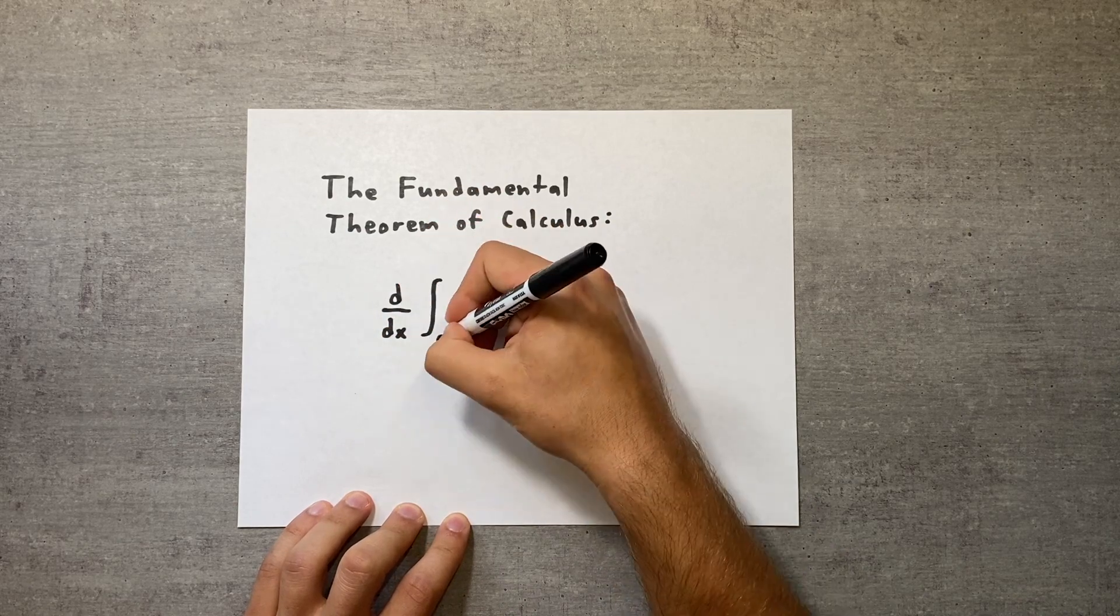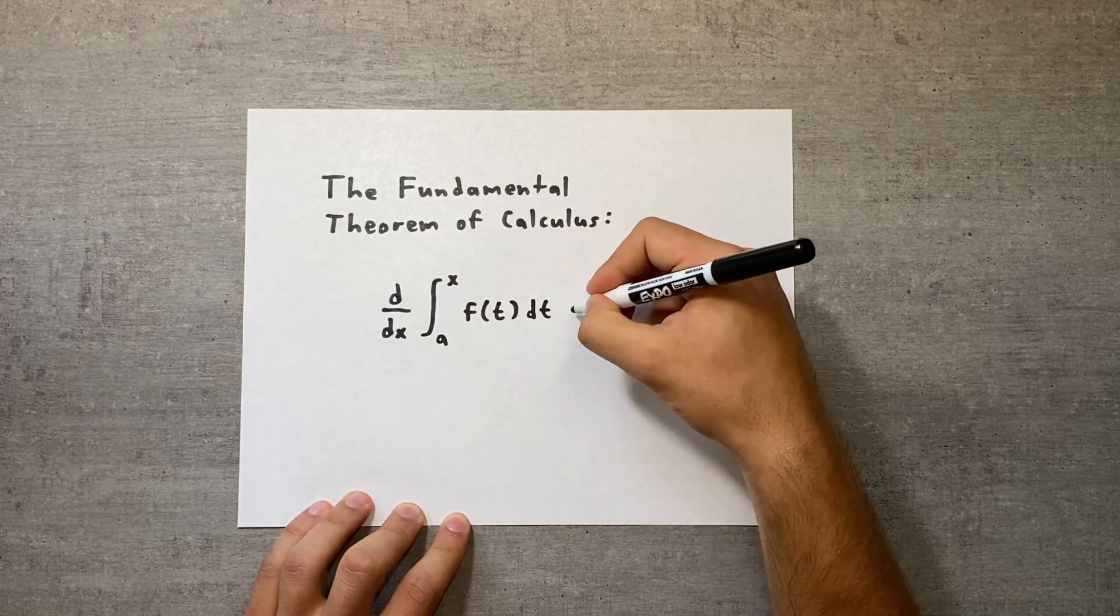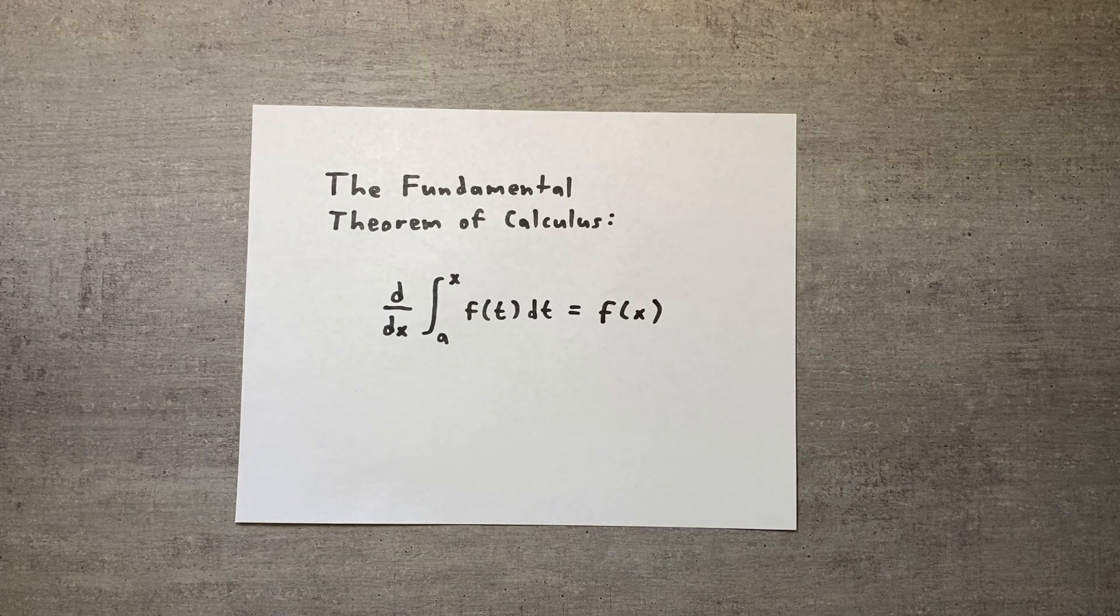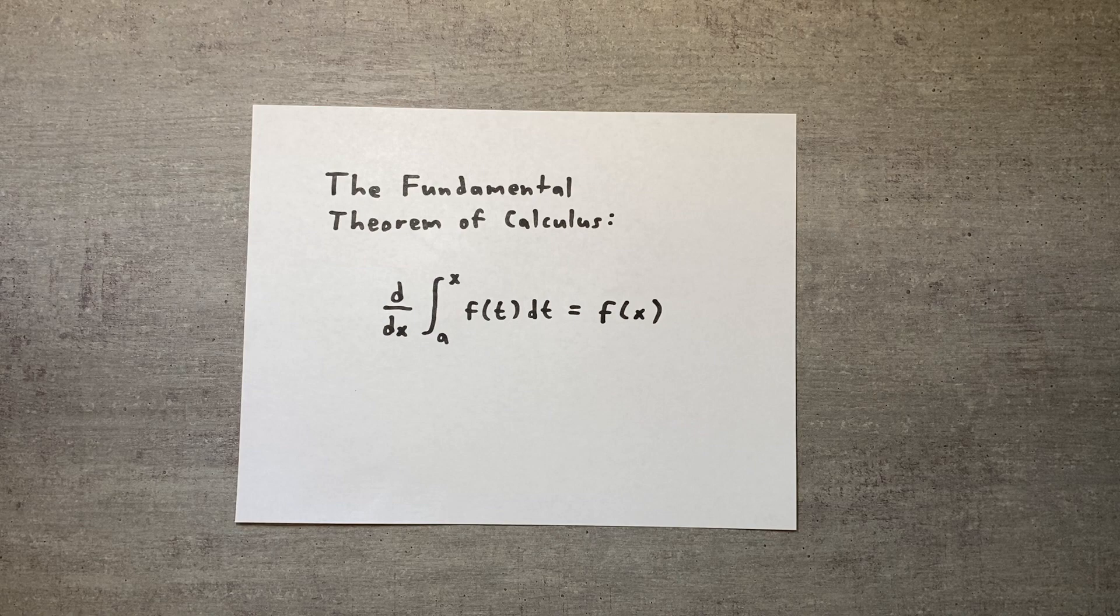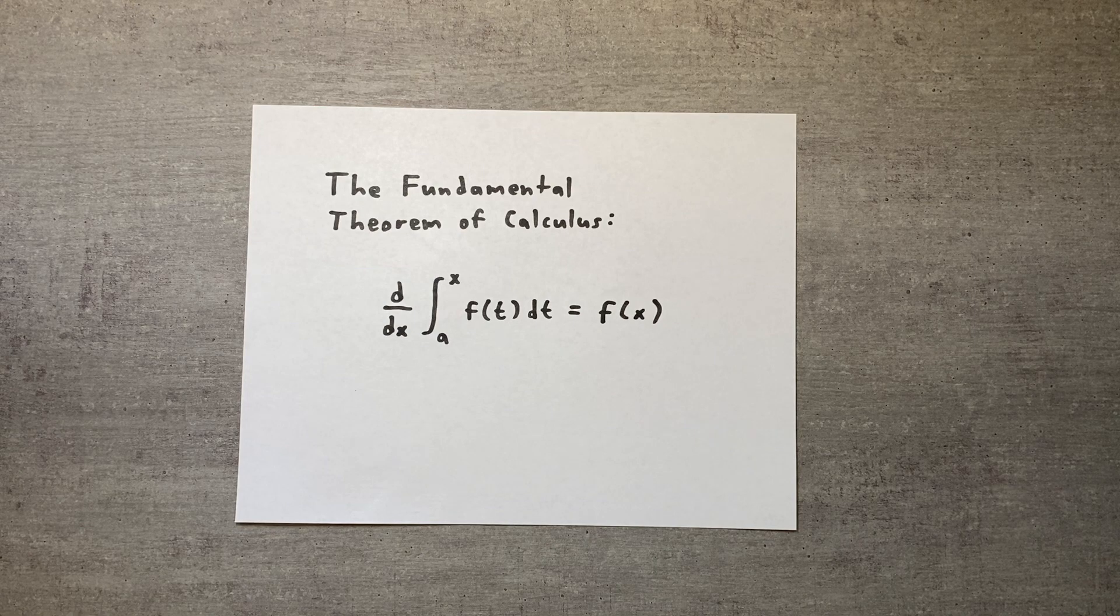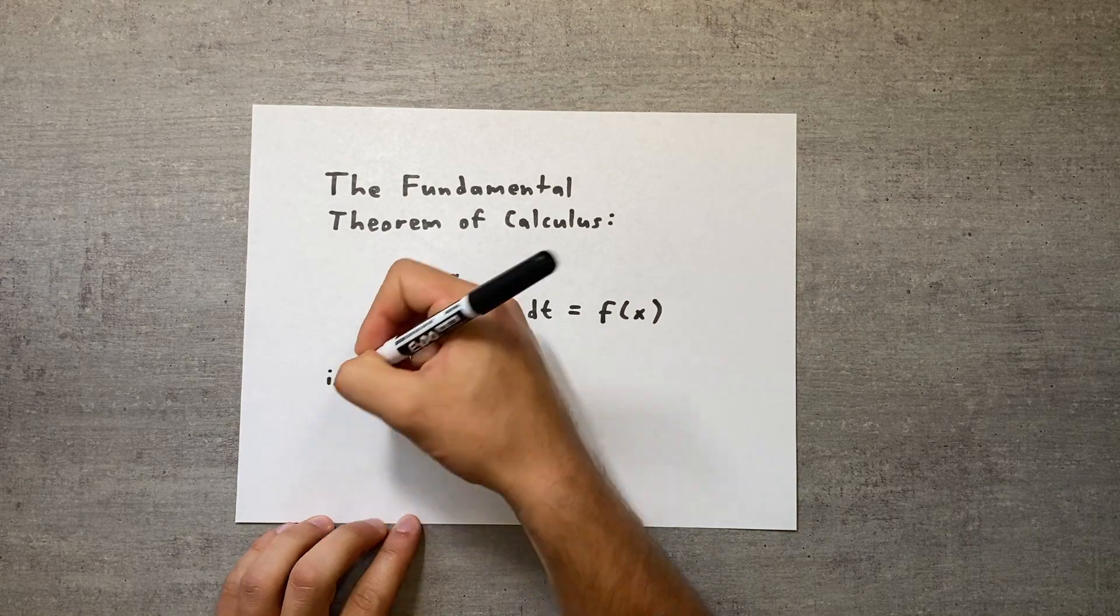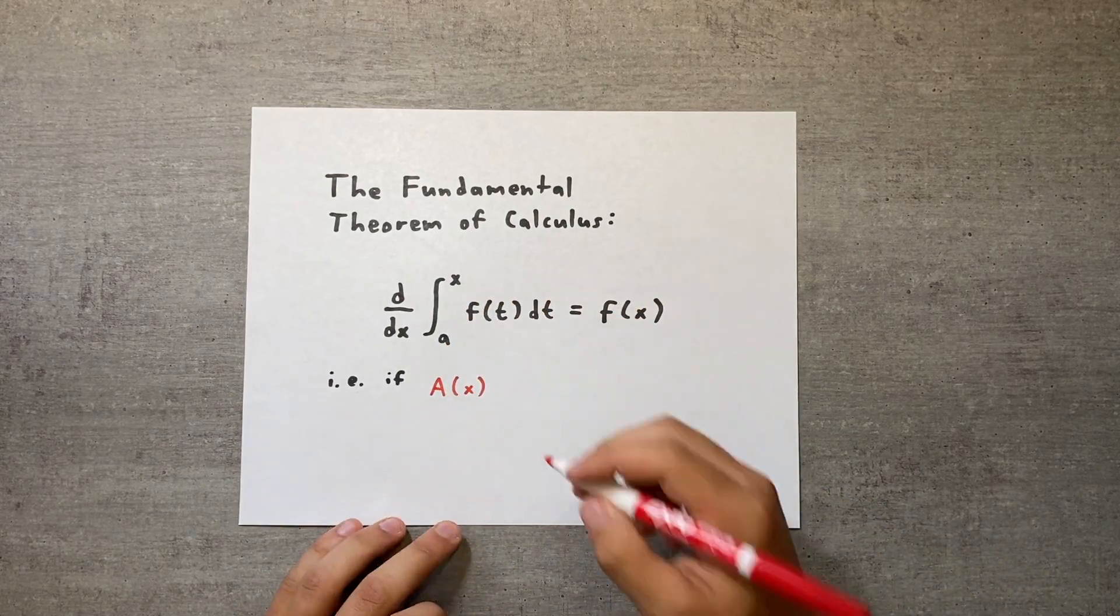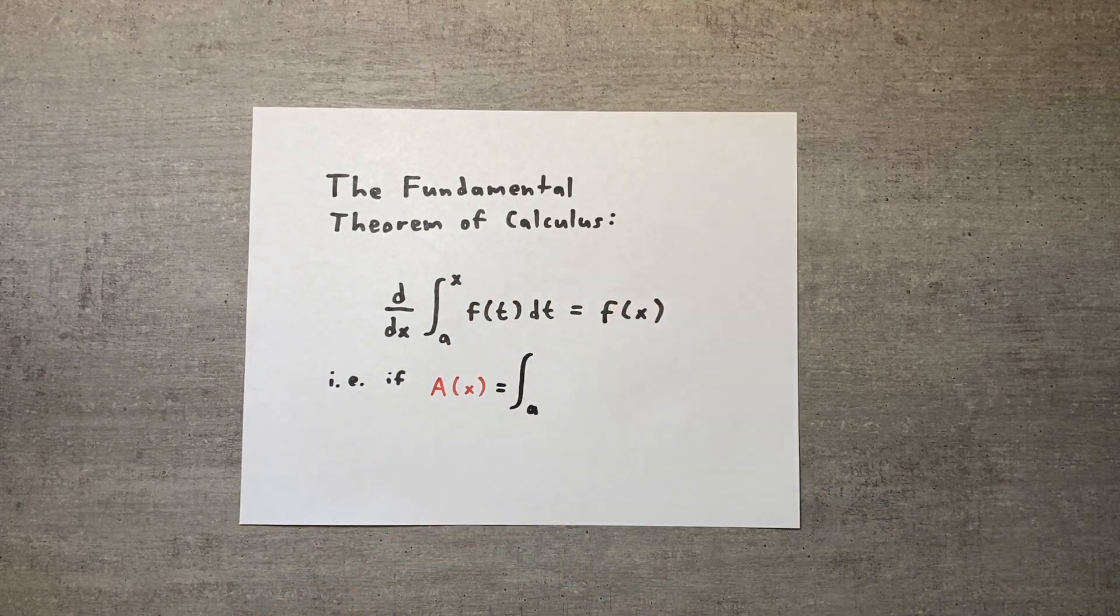Let's first take a look at what this equation is actually saying. The integral on the left gives the area under a continuous curve f between a fixed lower bound and a variable upper bound. Because x is the only independent variable, we can rewrite this integral as a function, which we'll call a of x, with the a standing for area.